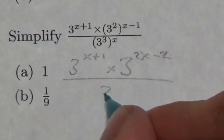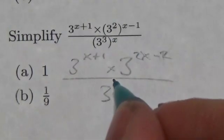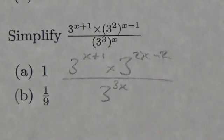And then down here in the denominator, we're just going to multiply the two exponents together. That just becomes 3 to the 3x.